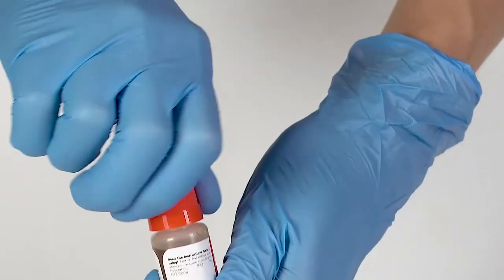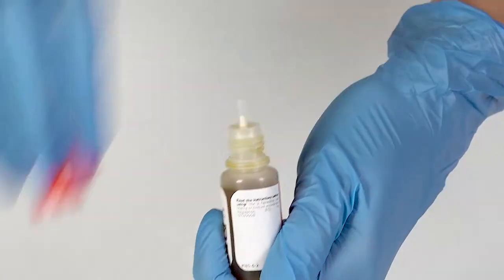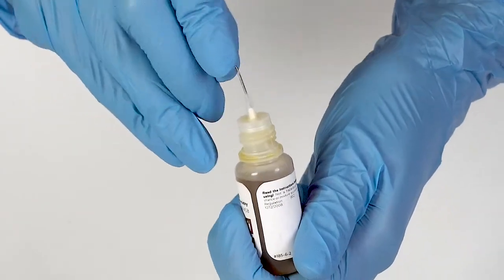To open a bottle containing a reagent, push the cap down and turn it. Pierce the bottle nozzle with an unbent paper clip.